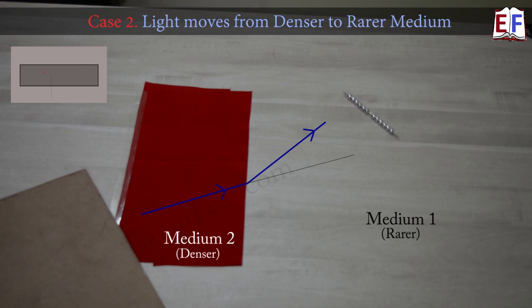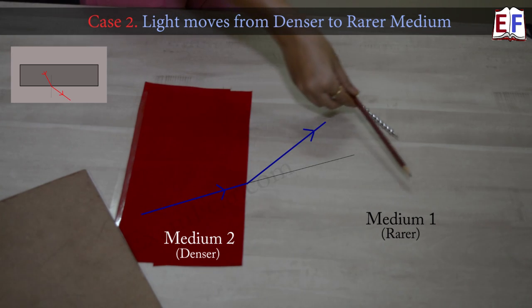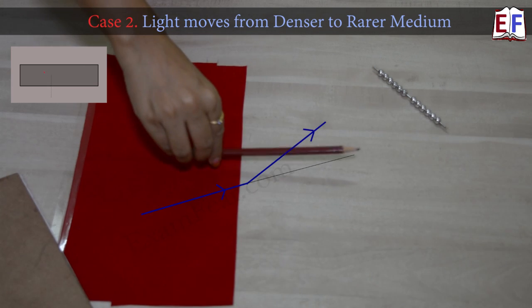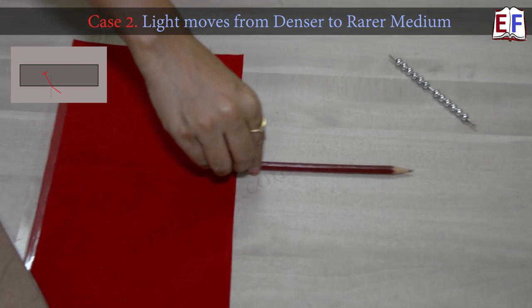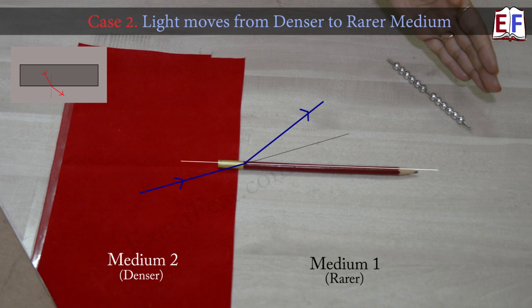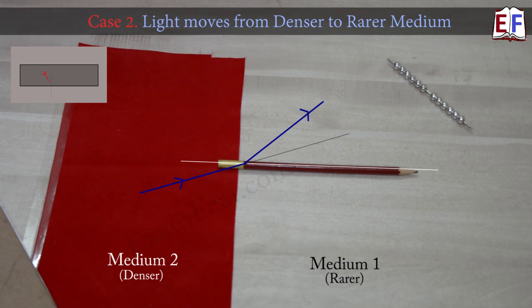So what happened this time? Now had it moved straight, it would have moved somewhat like this, maybe somewhere here, but it has actually moved here. So if this is the normal, instead of reaching somewhere here, it reached here. So it moved away from the normal.